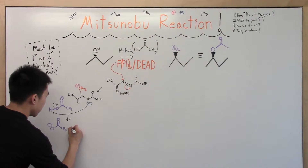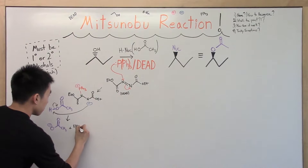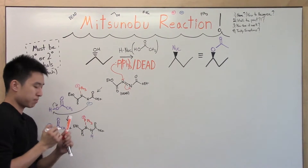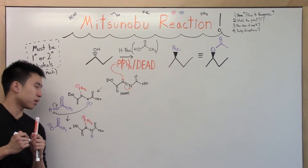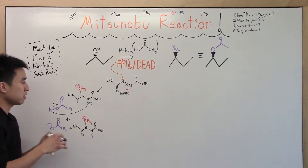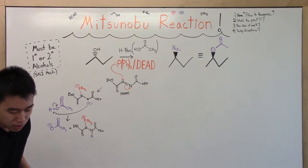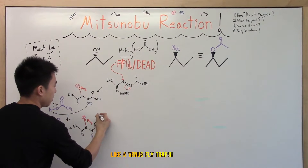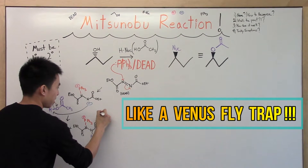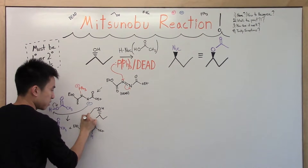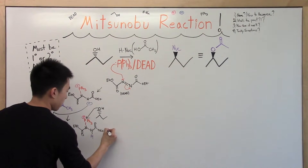And then we still have our DEAD molecule here, and it's about to participate in its second function. This is where we actually bring in our alcohol now. We're going to use this positive charge to lure it in and trap it — it's actually that exciting. The oxygen is going to attack the positive charge, just like that, and then we proceed from here.